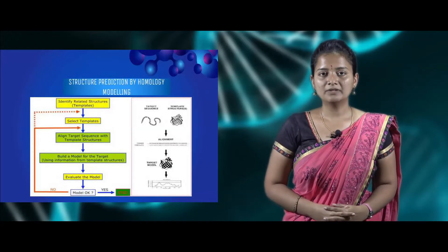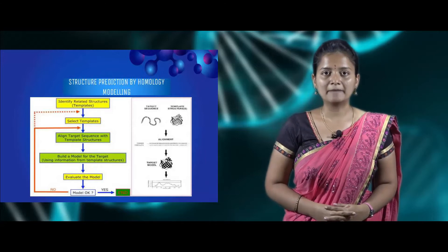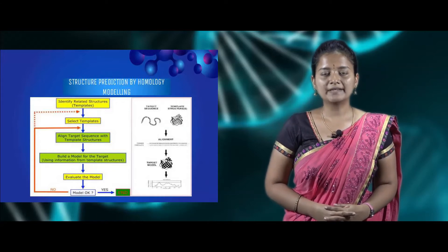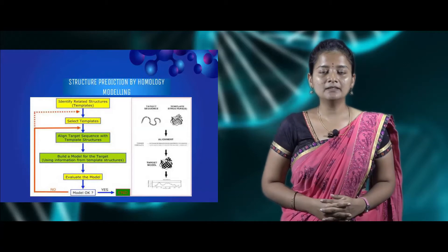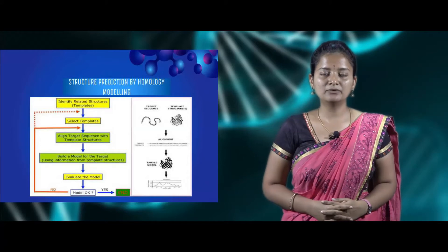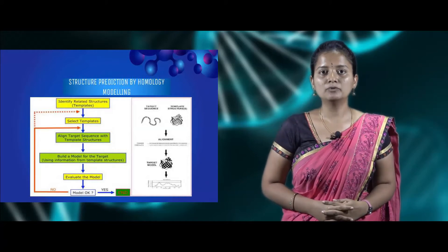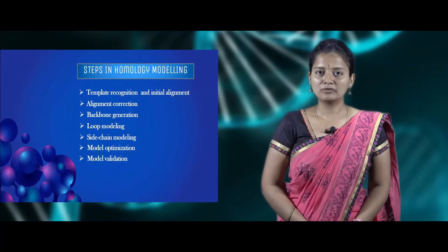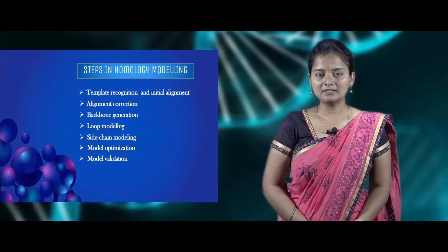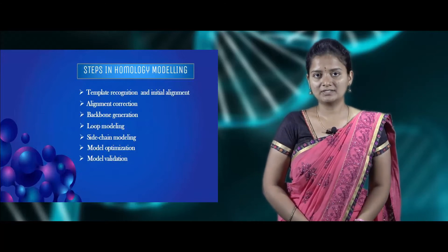Now we'll be discussing about the workflow for homology modeling. Initially we find or identify the template sequences or template structure, compare them, and get the best template structure. Then we compare our target protein or target sequence with the template structure and create a model. If the model is good then we get the perfect 3D protein structure; if not we trace back to get the best template again. There are about seven steps to perform homology modeling.